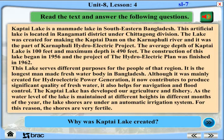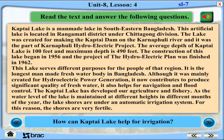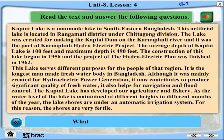Although Kaptai Lake was mainly created for hydroelectric power generation, it now contributes to producing a significant quantity of freshwater and helps with navigation and flood control. The lake has developed agriculture and fishery. The water level is maintained at different heights in different months, keeping the shores under an automatic irrigation system and making them very fertile. How can Kaptai Lake help with irrigation? How long did it take to finish the whole project? What purpose does it serve?